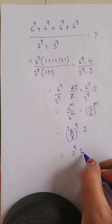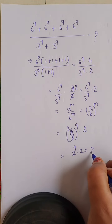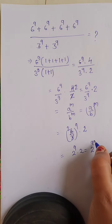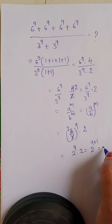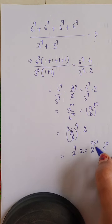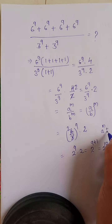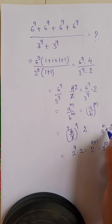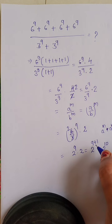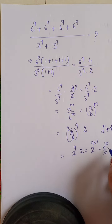Now 2 power 9 into 2 is equal to 2 power 9 plus 1, which is equal to 2 power 10. Because we know that when multiplying the same base, the powers add — a power 9 times a power 1 equals a power 9 plus 1. So it becomes 2 power 10, and this is the solution.